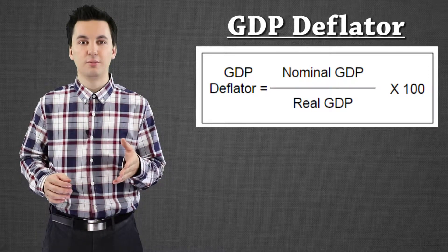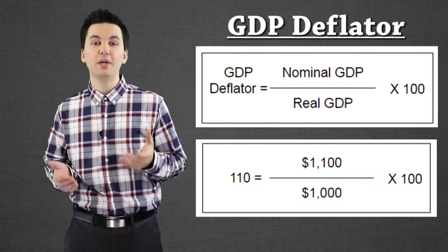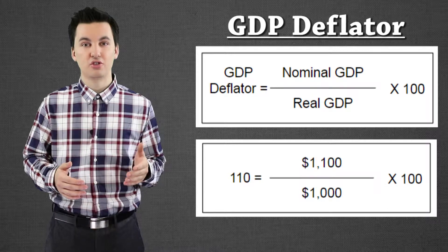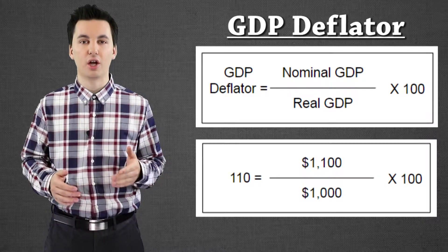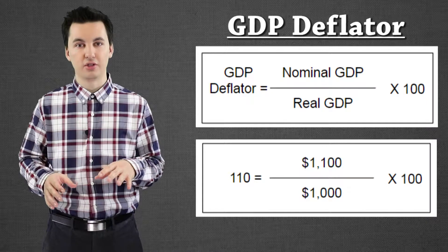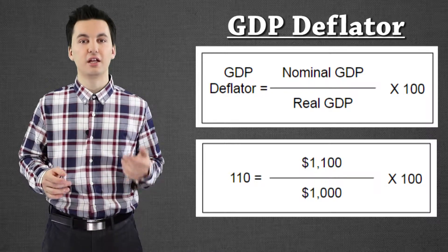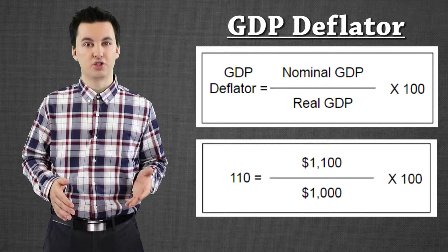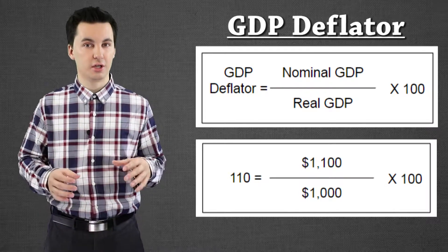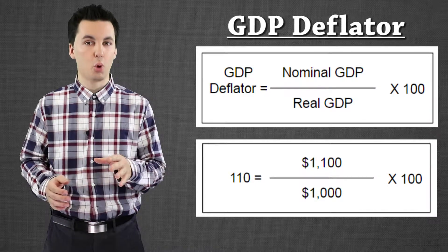So let's say our GDP deflator equaled 110. What that means is that our economy has actually seen inflation of 10% — prices have gone up 10%. There is a base year being used here to find our real GDP. So what we're seeing is inflation of 10% from the base year. It's not looking at year to year; this is all comparing from our base year. That's important to note.